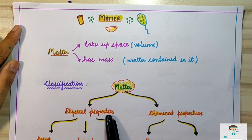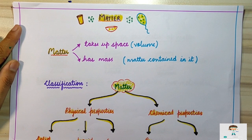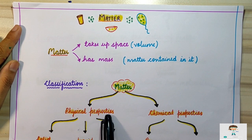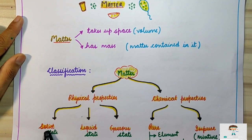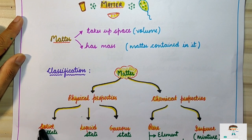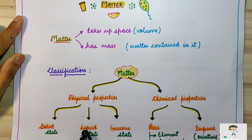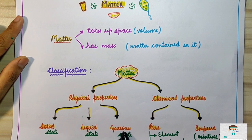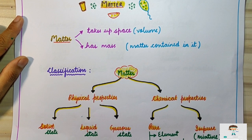What do we mean by physical properties of matter? On the basis of physical appearance — how particles look, how they are arranged — all these things come under physical properties. On the basis of physical properties, matter can be classified into three types: solid state, liquid state, and gaseous state of matter.